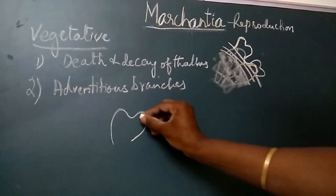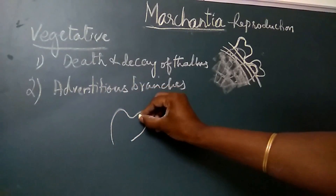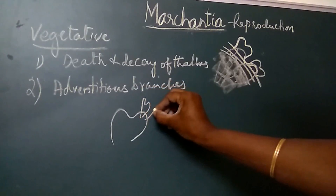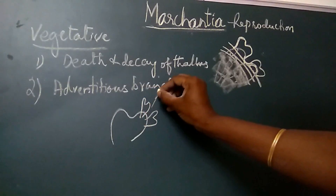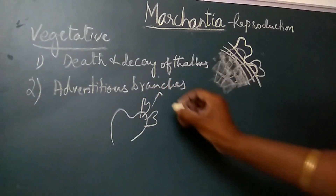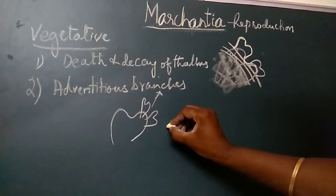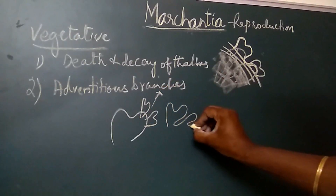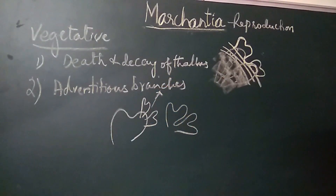On the ventral surface towards the apex, small adventitious branches develop. These are the adventitious branches. When they get detached from the parent plant, each branch develops into a new thallus of Marchantia.